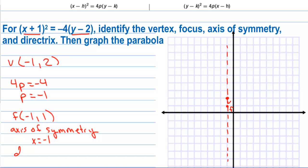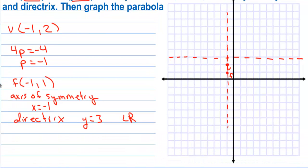The directrix is on the opposite side of the vertex as the focus. Since the focus is 1 unit down, the directrix is 1 unit up: y = 3. For graphing, the latus rectum = |4p| = |4(−1)| = 4, so we go 2 units to the right and 2 units to the left of the focus to find two points on the parabola.